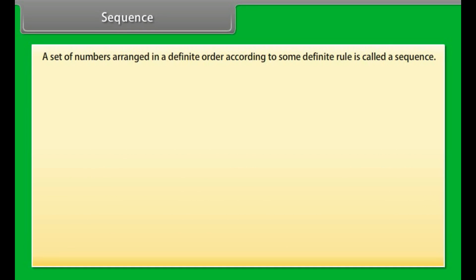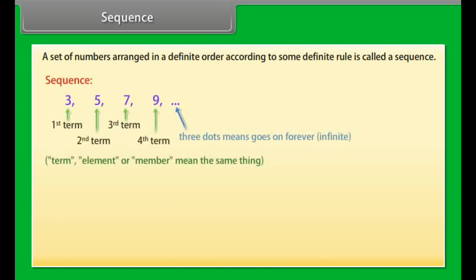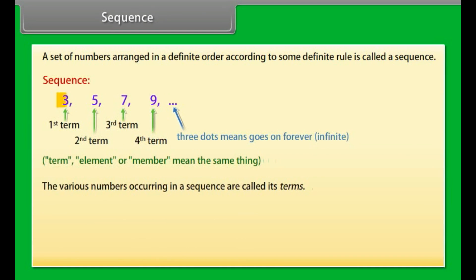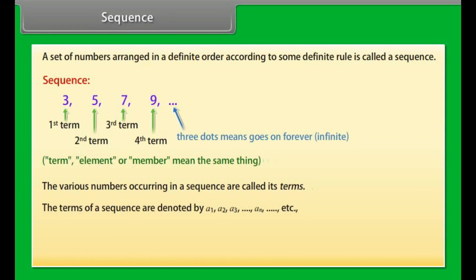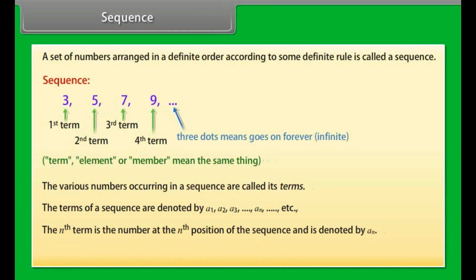A set of numbers arranged in a definite order according to some definite rule is called a sequence. The various numbers occurring in a sequence are called its terms. The terms of a sequence are denoted by a1, a2, a3, till an, etc. The nth term is the number at the nth position of the sequence and is denoted by an. The nth term is also called the general term of the sequence.